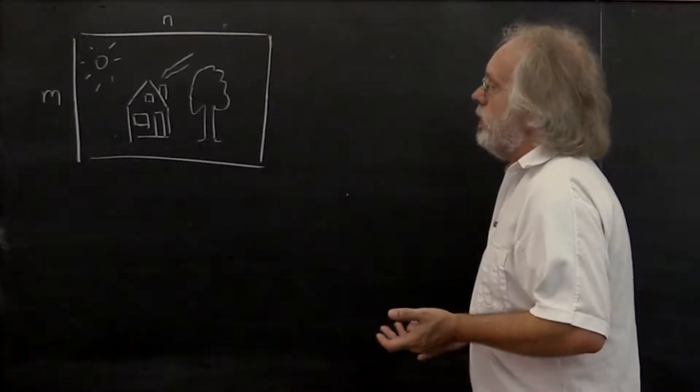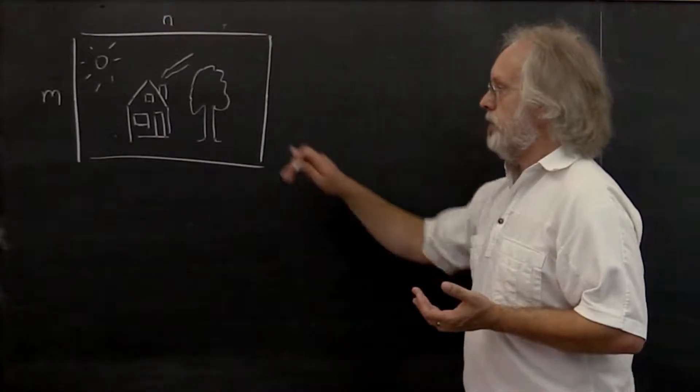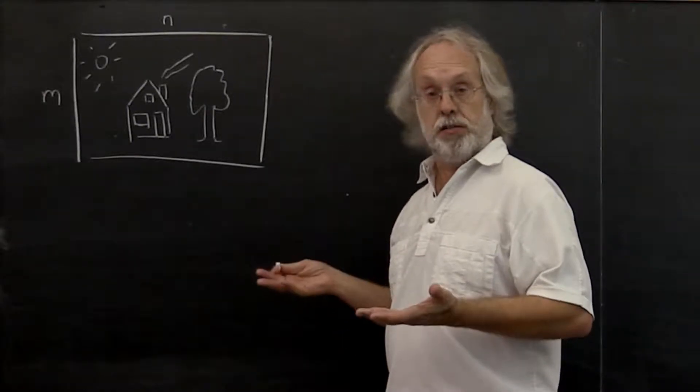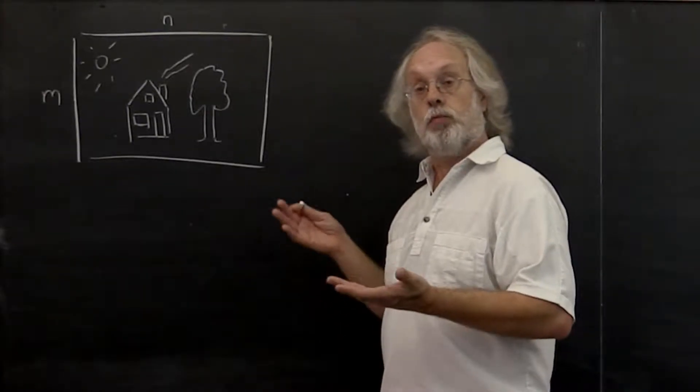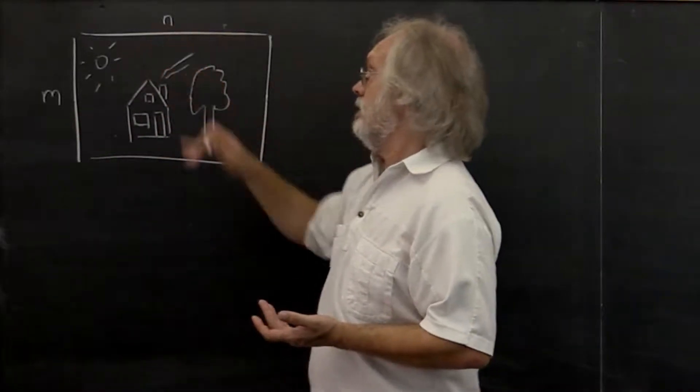So what's the idea? Let's say you take a picture with your digital camera. The picture really is stored as a two-dimensional array of pixels, and pixels really are numerical values. So we can think of it as an M by N matrix.